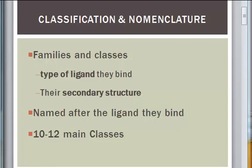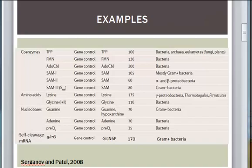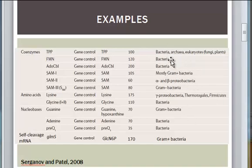There are many classes known. However, 10 to 12 classes are most common and are under study for therapeutic use. There are different types of ligands, including coenzymes, amino acids, and nucleotides. The very interesting point about riboswitches is that they are mainly found in bacteria, which increases the specificity of the drug domain.